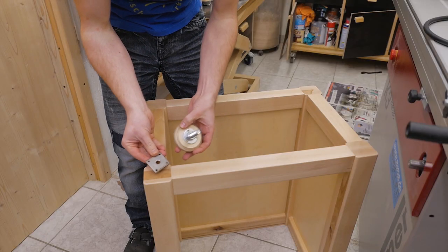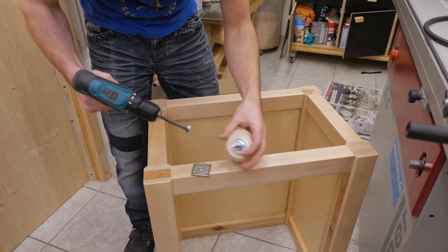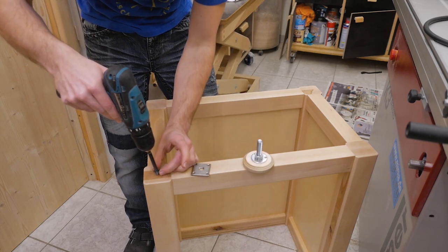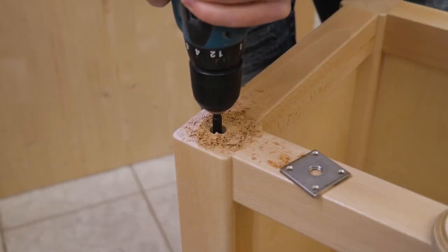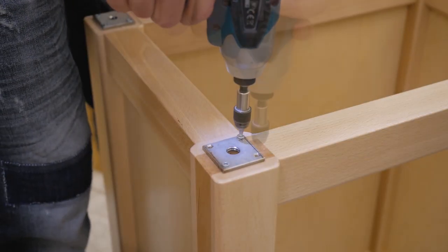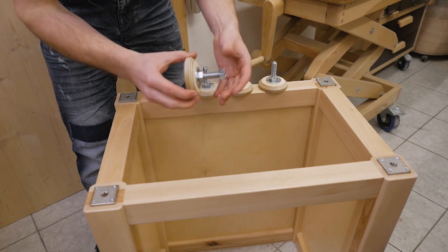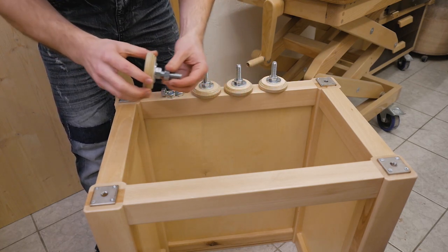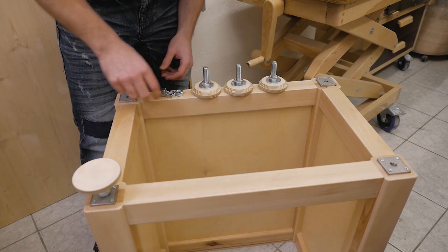Now mounting the feet on the cabinet is quite simple. You just need to drill a hole that's bigger than the bolt you used in the center of the feet.